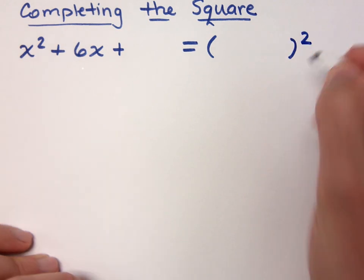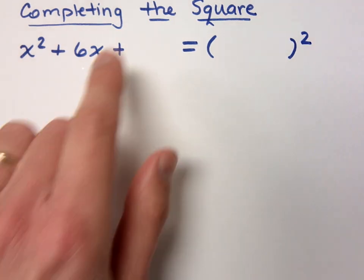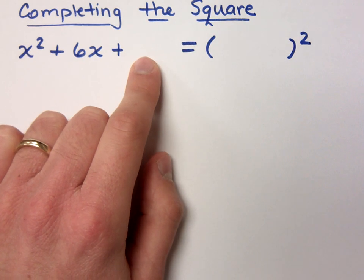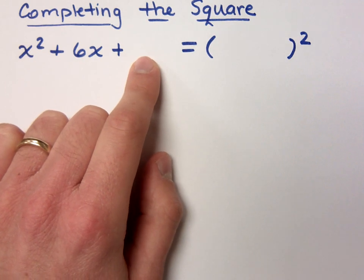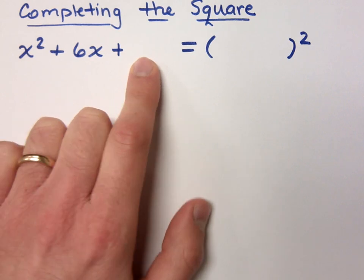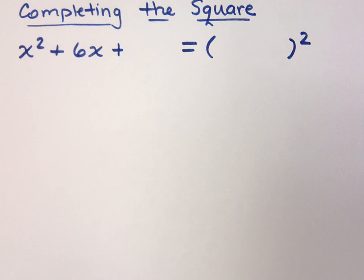I want to create something here that will factor. There are a lot of numbers I can put here so this guy will factor. I can put the number 5. Wouldn't x squared plus 6x plus 5 factor? It'd be x plus 5 and x plus 1, but that doesn't help me out. I want to create a polynomial that factors with the exact same two factors.